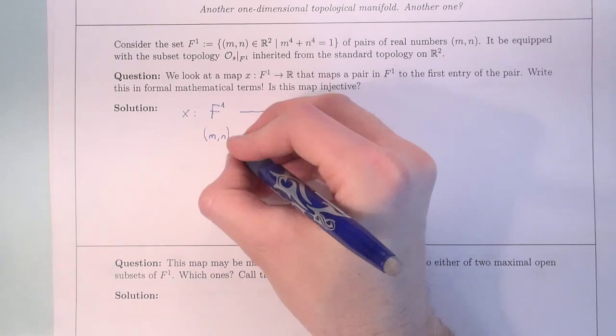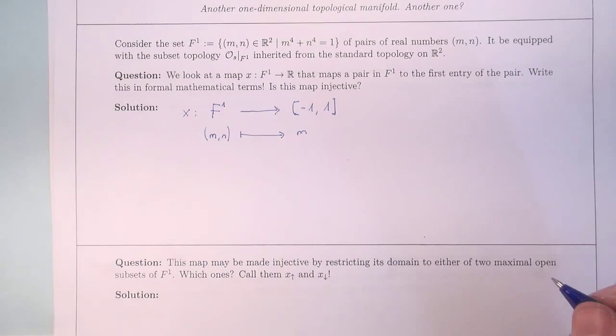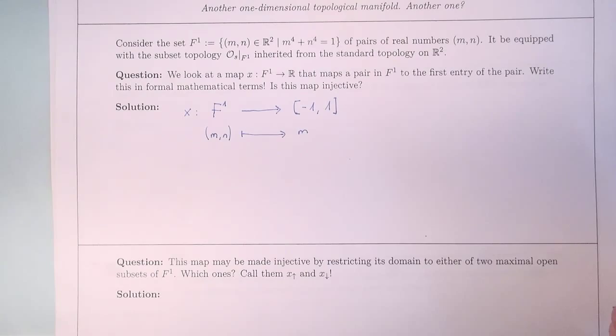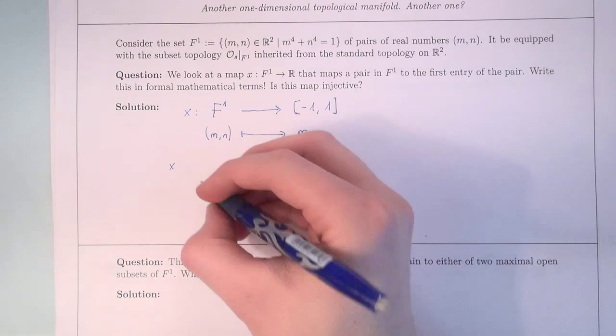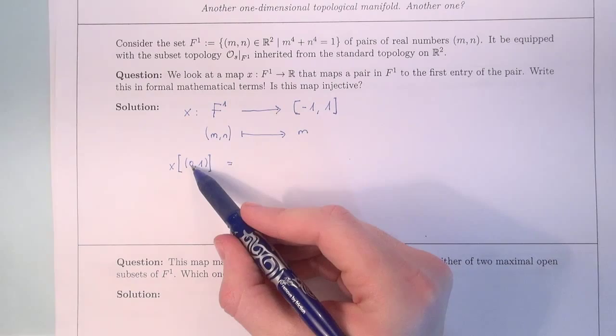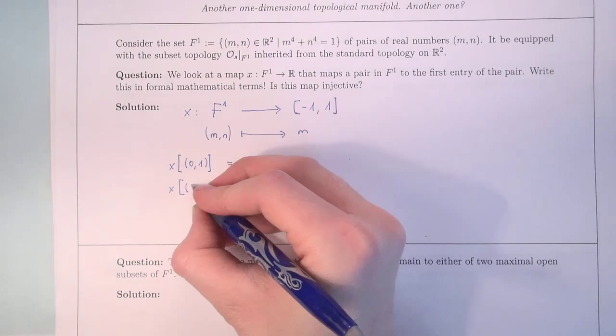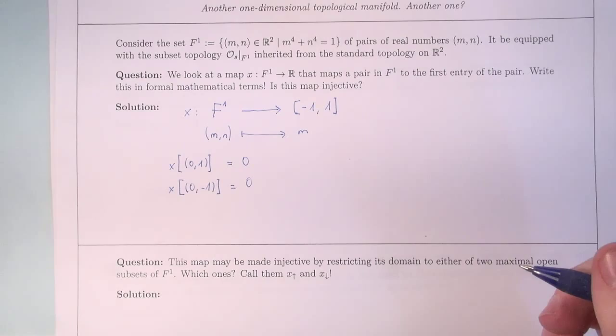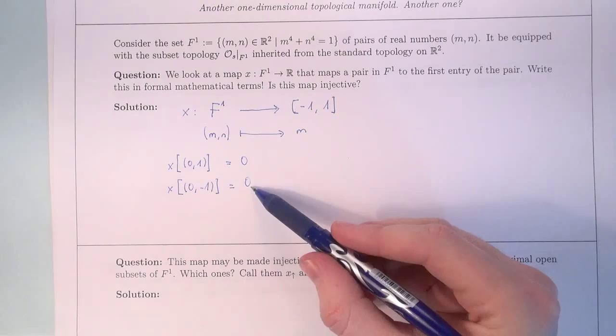Is this map injective? Well, it isn't. The image of the pair (0, 1) under X maps to 0. And the image of the pair (0, −1) also gets mapped to 0. So with this map we hit 0 in the target twice. This violates injectivity, thus X is not injective.